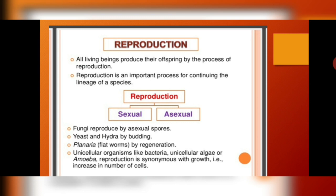The next criteria is reproduction, another important criteria. All living beings produce their offsprings — that is young ones — by the process of reproduction. It is further divided into two categories: sexual reproduction and asexual reproduction. The lower forms of organisms like fungi reproduce asexually by the process of spore formation. Hydra uses budding. Planaria uses regeneration. Unicellular organisms like bacteria, unicellular algae, and amoeba also reproduce.